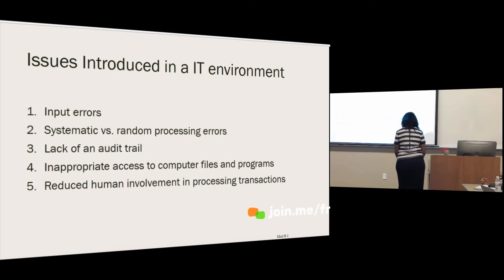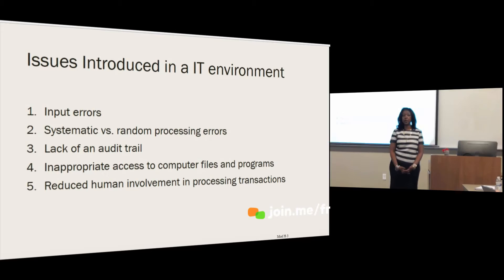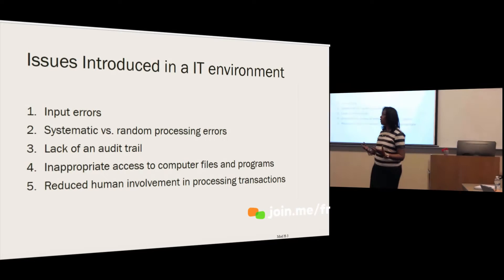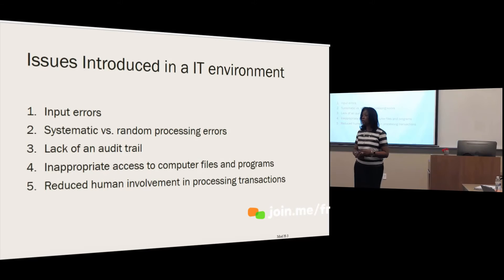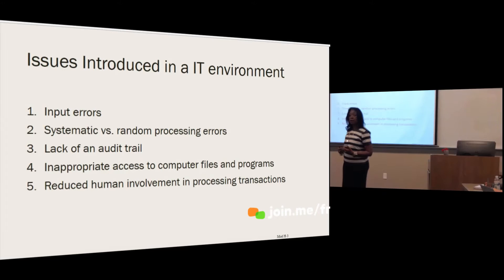Some of the issues that arise in an IT environment include input errors — human error when inputting information into the system. The key question is: what are the checks and balances to ensure information is input correctly? For example, management makes an assertion about occurrence with respect to revenue, which says that all revenue reported in the financial statements has occurred and was made to a non-fictitious customer.